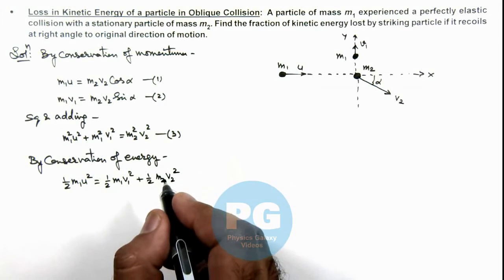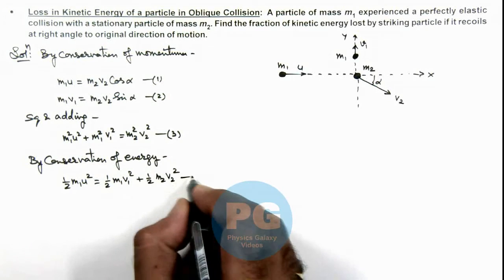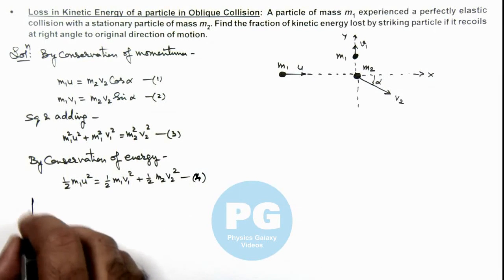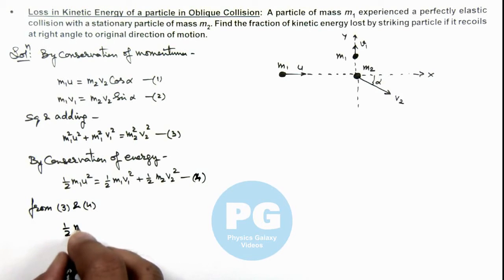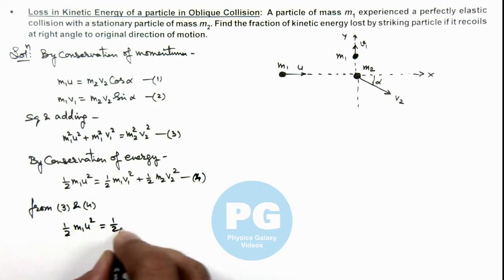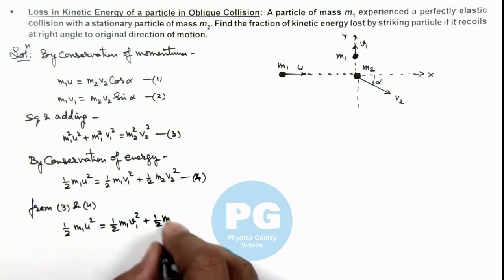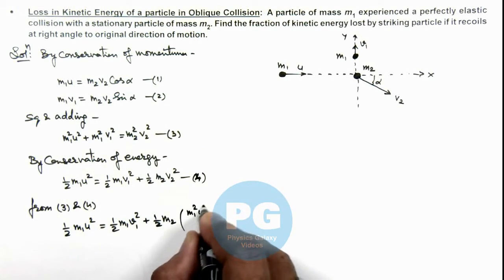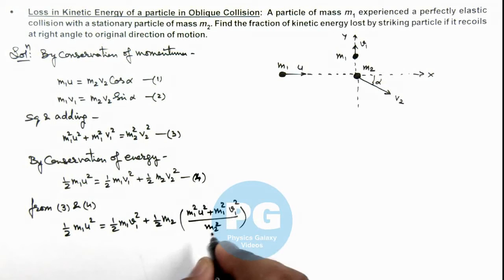In this energy equation we can substitute the value of m2*v2² from Equation 3. Substituting the value of v2² from Equation 3, we get from Equations 3 and 4: half*m1*u² = half*m1*v1² + half*m2 multiplied by (m1²u² + m1²v1²) divided by m2². In this expression, one factor of m2 gets cancelled out.